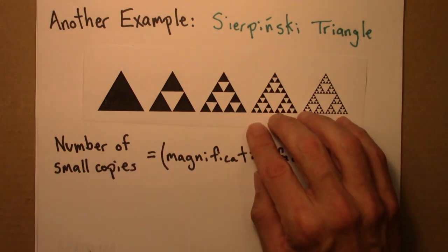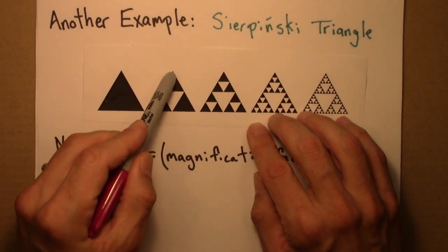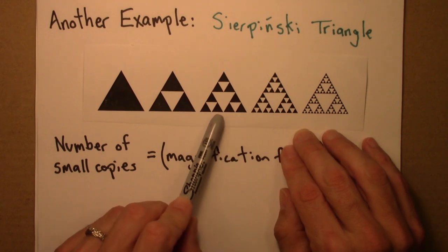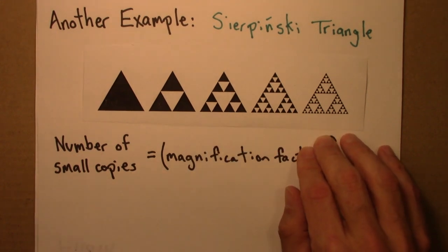One's then left with three triangles. One, two, three. From each of those, remove the middle triangle. Now there are nine triangles. From each of those, remove the middle triangle. And so on.